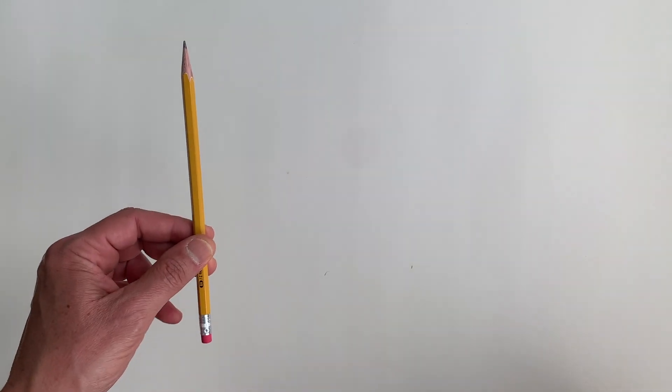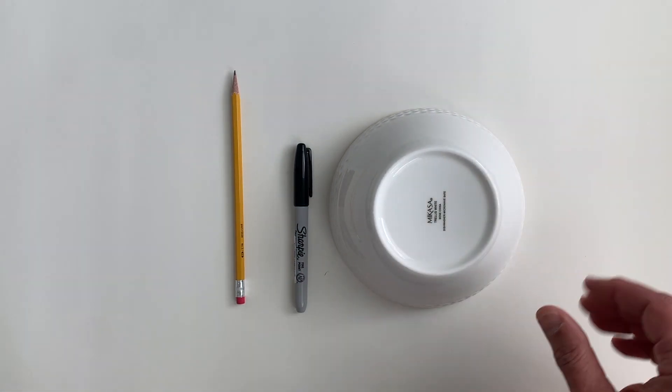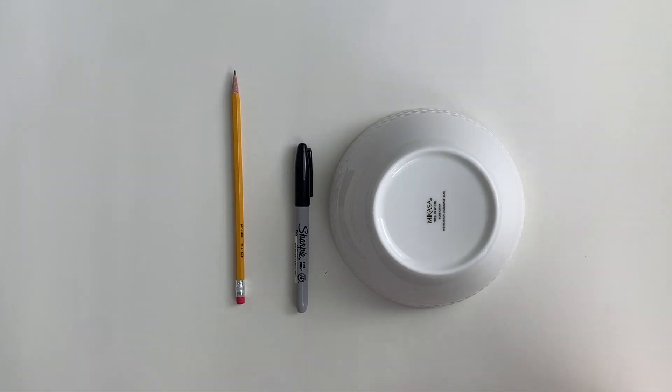And as always, we're going to need three things: a pencil, a Sharpie, and to begin, a bowl, a cup, a compass to make a nice circle to begin our drawing. Okay, if you have those three things and you're ready to go, let's draw Michelangelo Buonarotti.